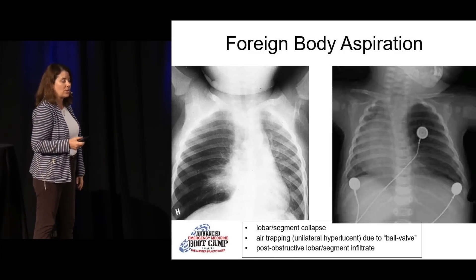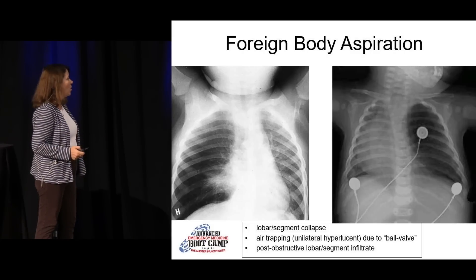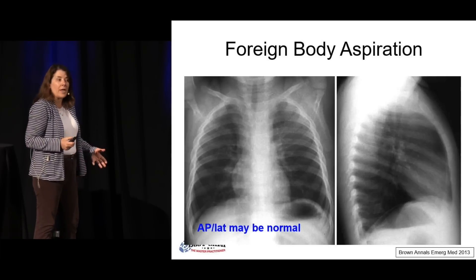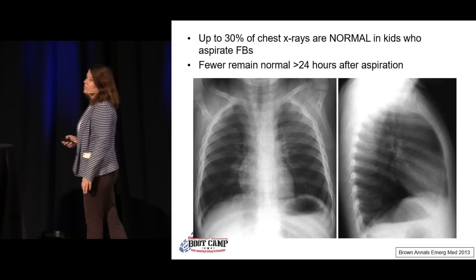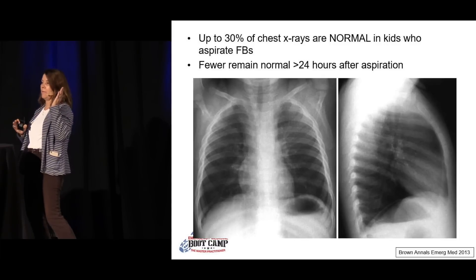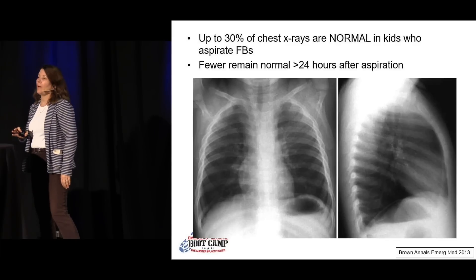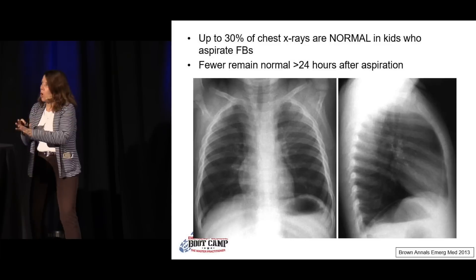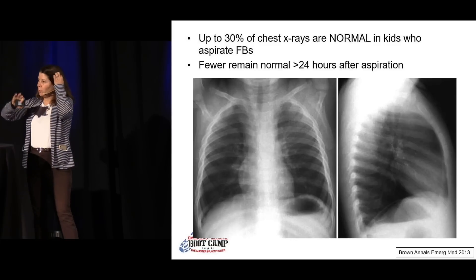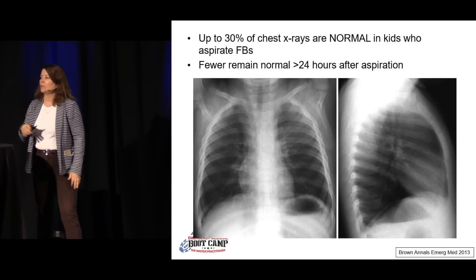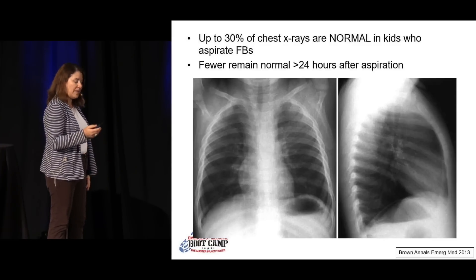Sometimes you're lucky enough to get that on the x-ray — it's a no-brainer: kid came in choking, you've got an abnormal x-ray, the kid clearly needs to get scoped. Unfortunately, a lot of x-rays can be completely normal — about a third of x-rays can be absolutely normal and yet the child still has a foreign body down there. The longer the child has been since the choking episode, the less likely they're going to have a normal x-ray — something's going to show up, an infiltrate or hyperinflation. But if they come in pretty quickly, the x-ray can be completely normal.